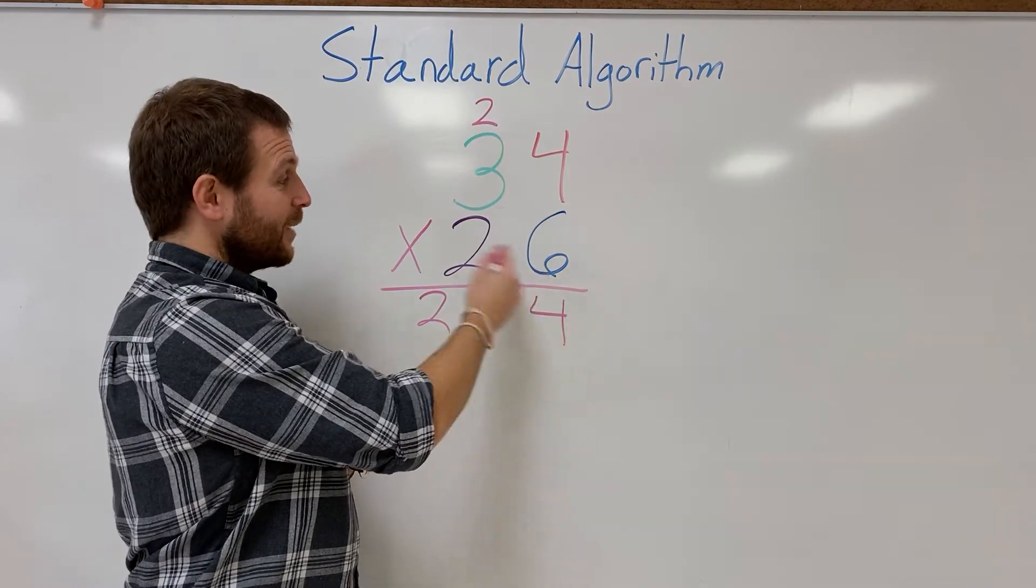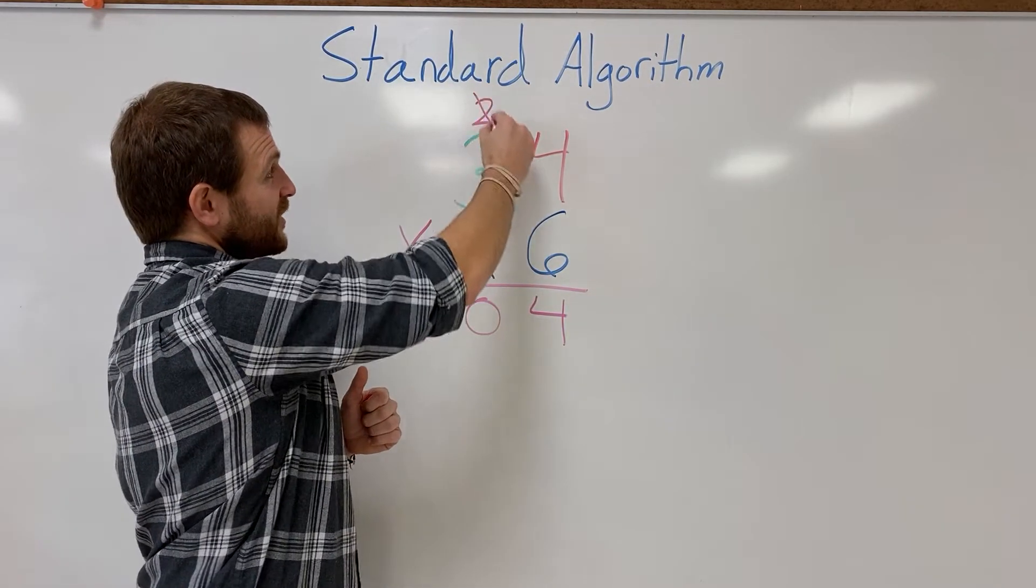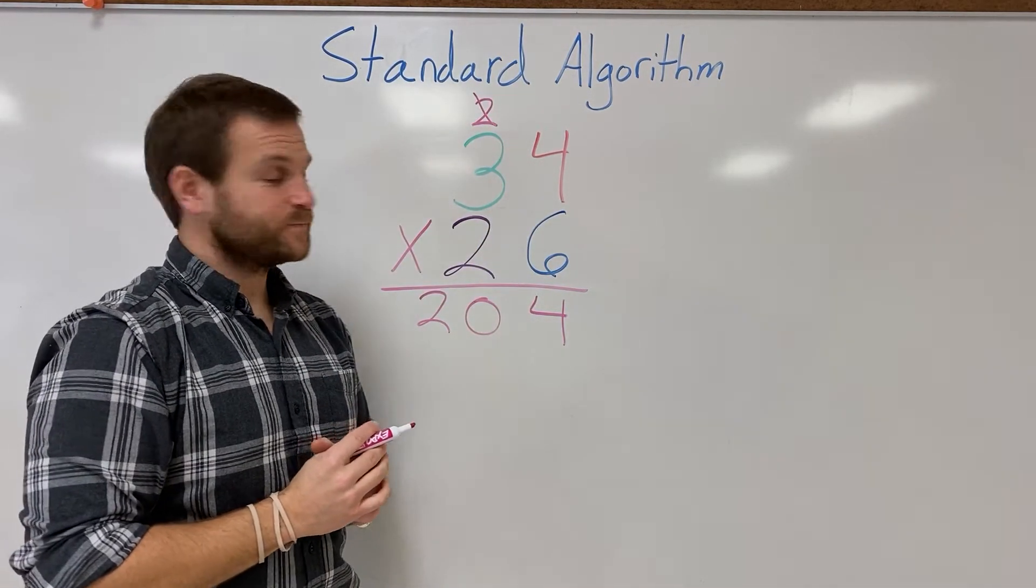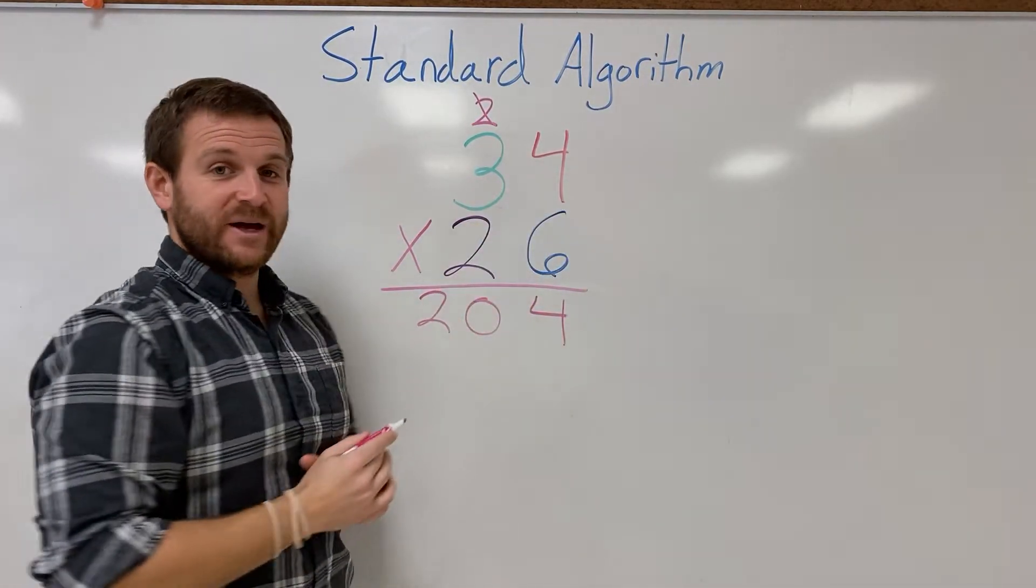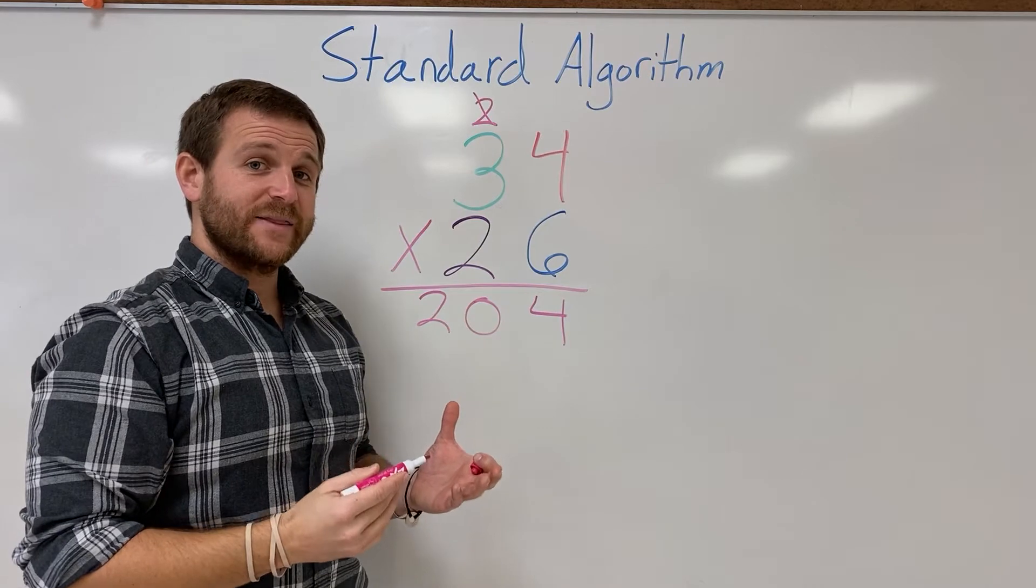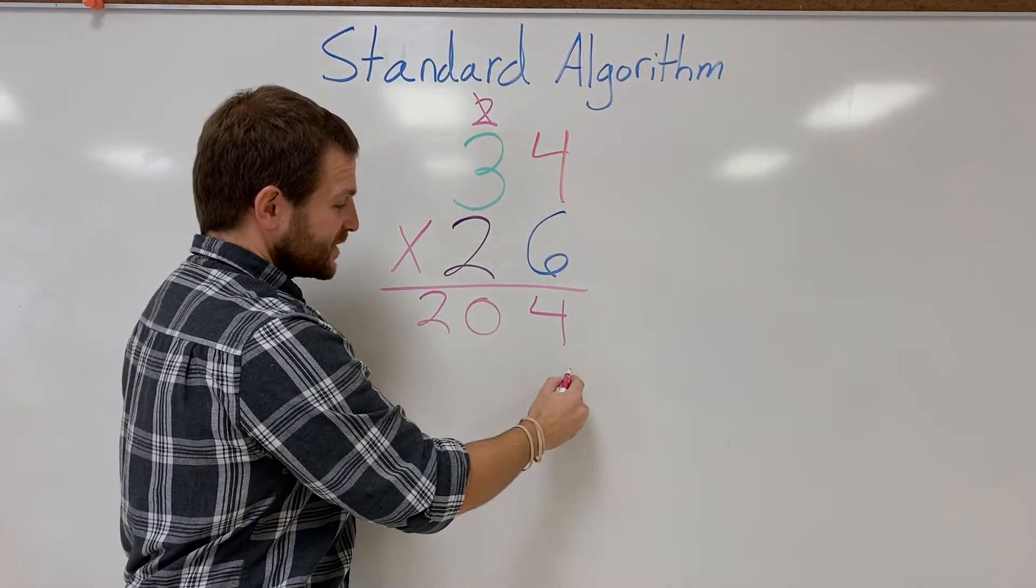I'm done with my 6, now I'm ready to move on. I just want to get rid of this because I've already used it. Now we need to do 20. We're gonna be multiplying 20 by 34. A little shortcut that I like to use is by placing my 0 here.